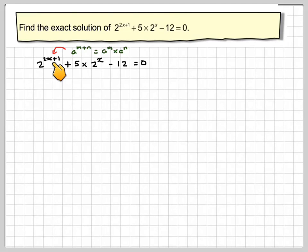We know that a to the n plus n is equal to a to the n times a to the n. So this will become 2 to the 2x times 2 to the 1. So we're going to have 2 brackets 2 to the 2x plus 5 times in brackets 2 to the x minus 12 is equal to 0.